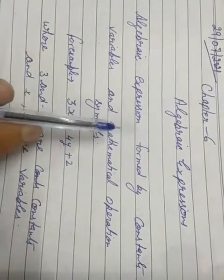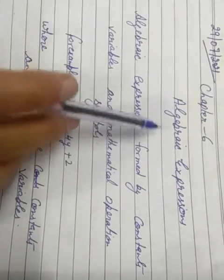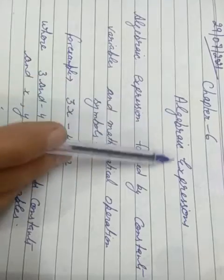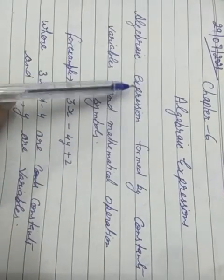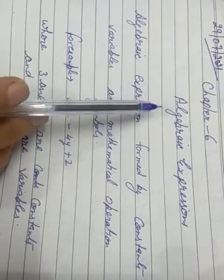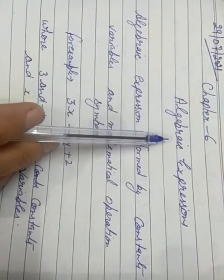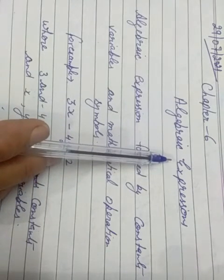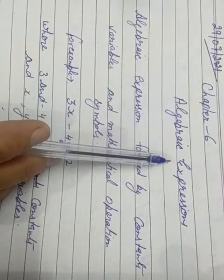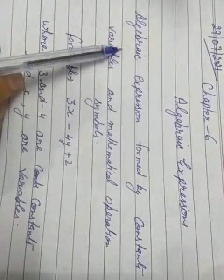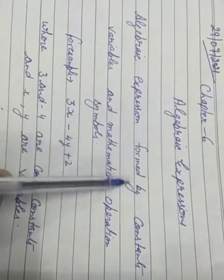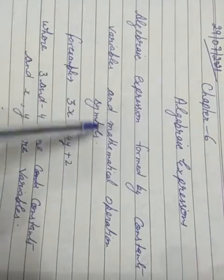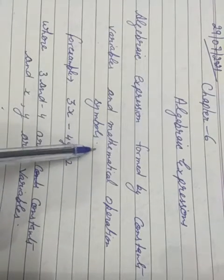Good morning children. Today we are going to start chapter 6: Algebraic Expressions. What is an Algebraic Expression? How can we make an Algebraic Expression? Algebraic Expressions are formed by constants, variables, and mathematical operation symbols.